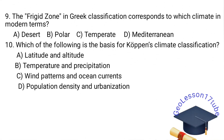Question number nine: The Frigid zone in Greek classification corresponds to which climate in modern terms? A. Desert. B. Polar. C. Temperate. D. Mediterranean. The Frigid zone refers to the Polar zone, which is the coldest region.